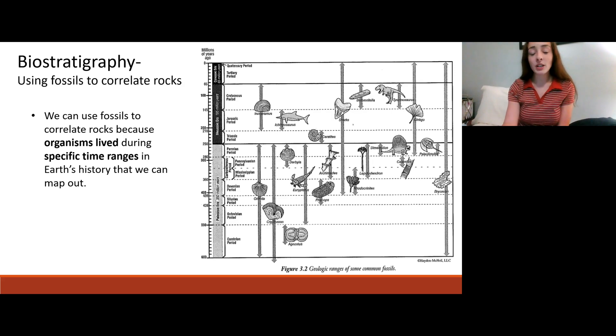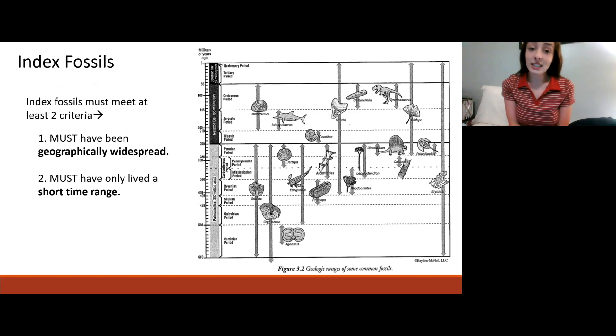One of the main types of fossils that we want to see when we're trying to use biostratigraphy is something called an index fossil. Index fossils are fossils that are super helpful in biostratigraphy because they mark a specific time in Earth's history. They must meet at least two criteria: they must have been geographically widespread and they must have had a relatively short time range. This helps us correlate rocks of a certain age throughout the world which is immensely helpful in historical geology.